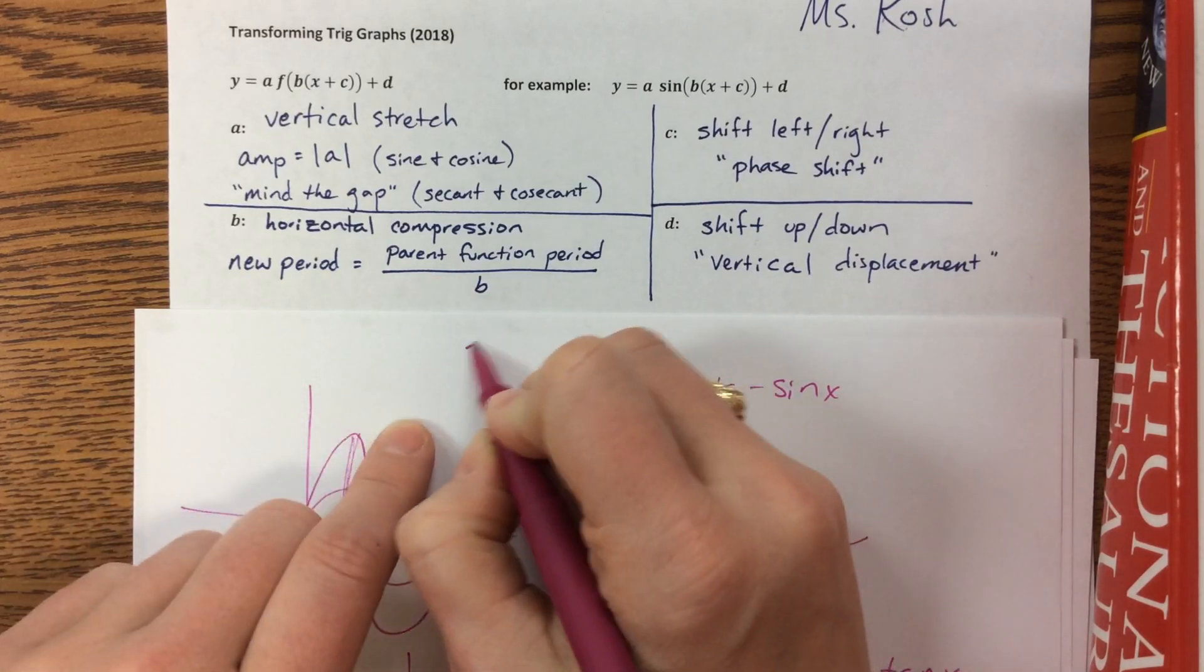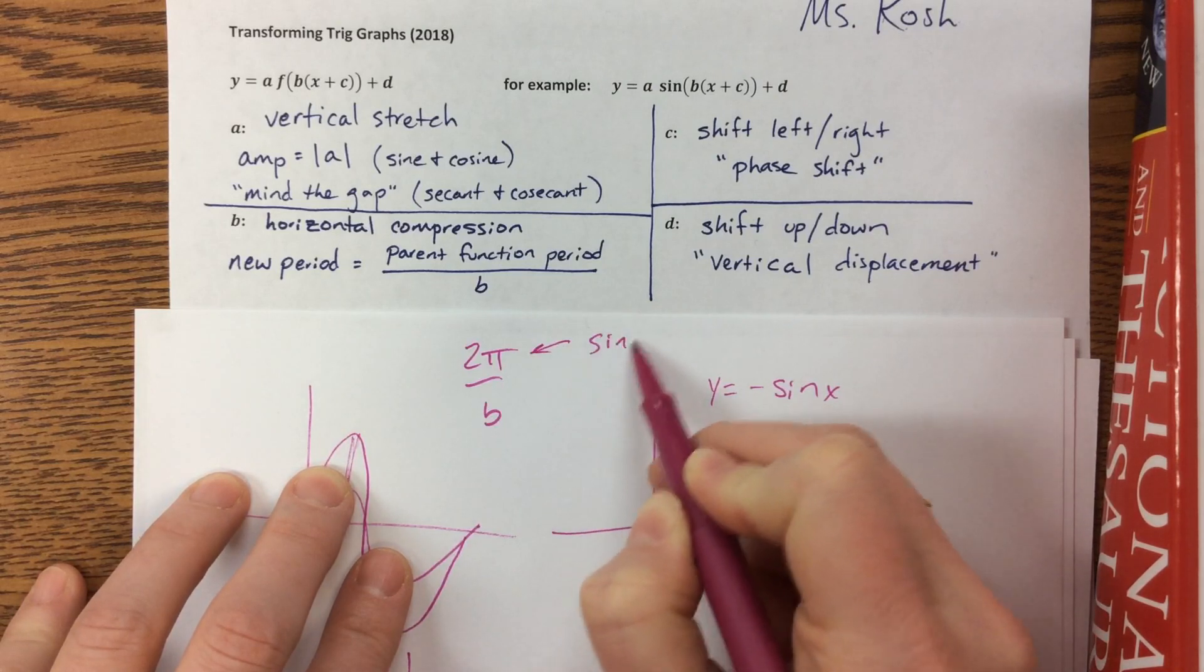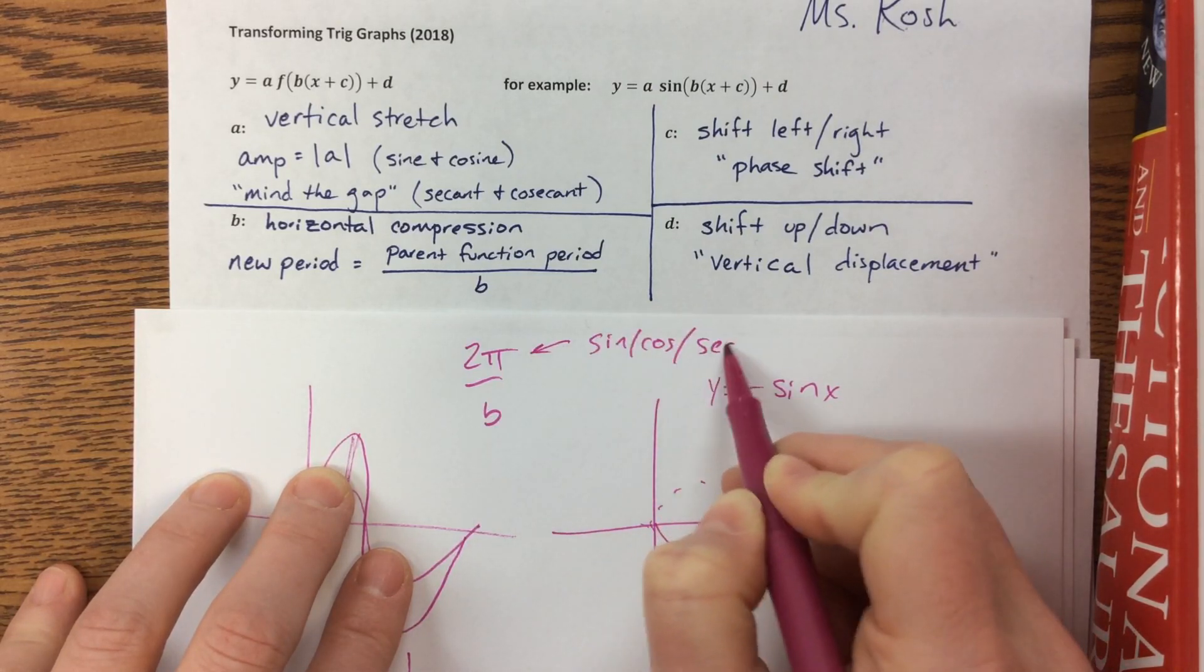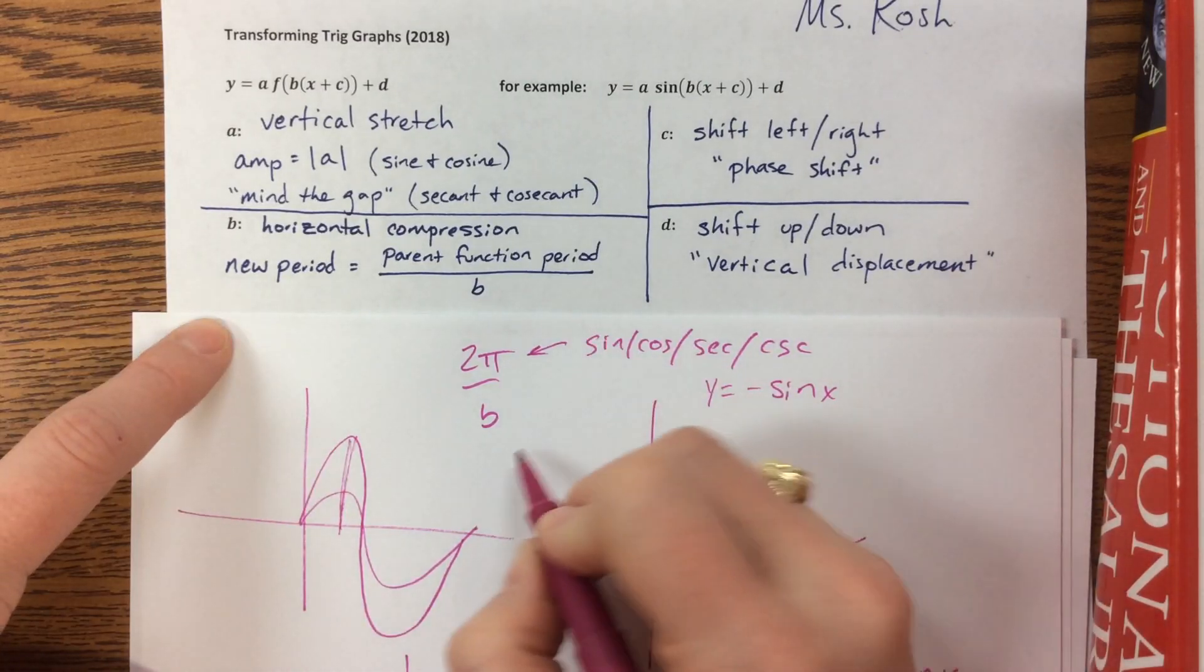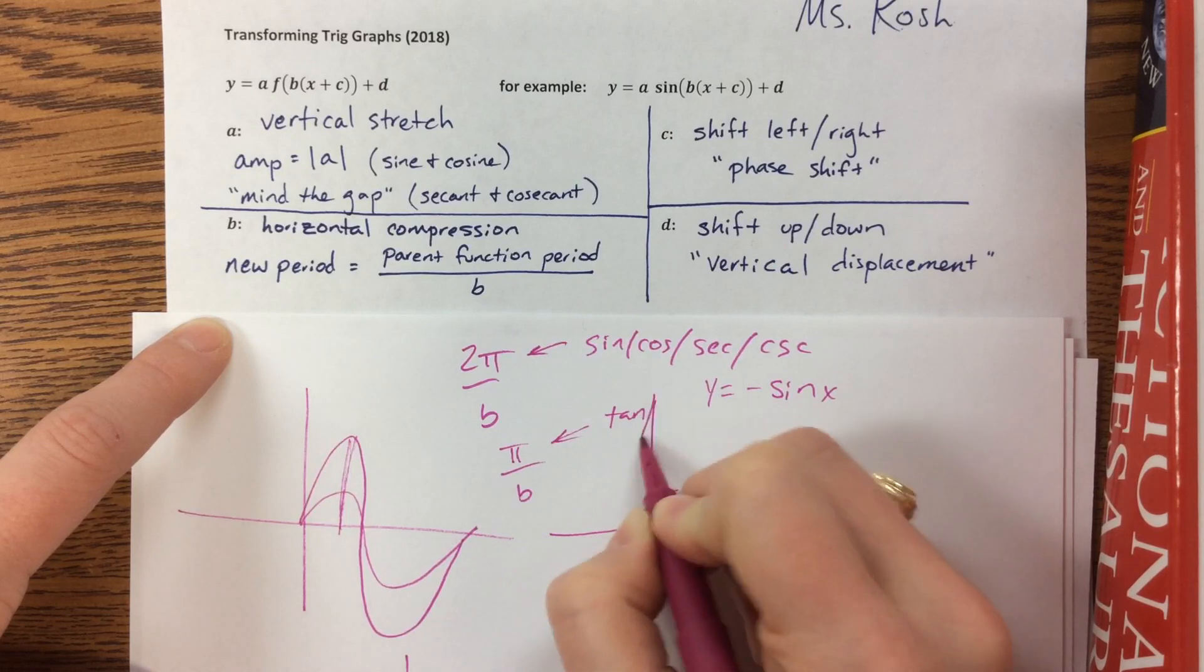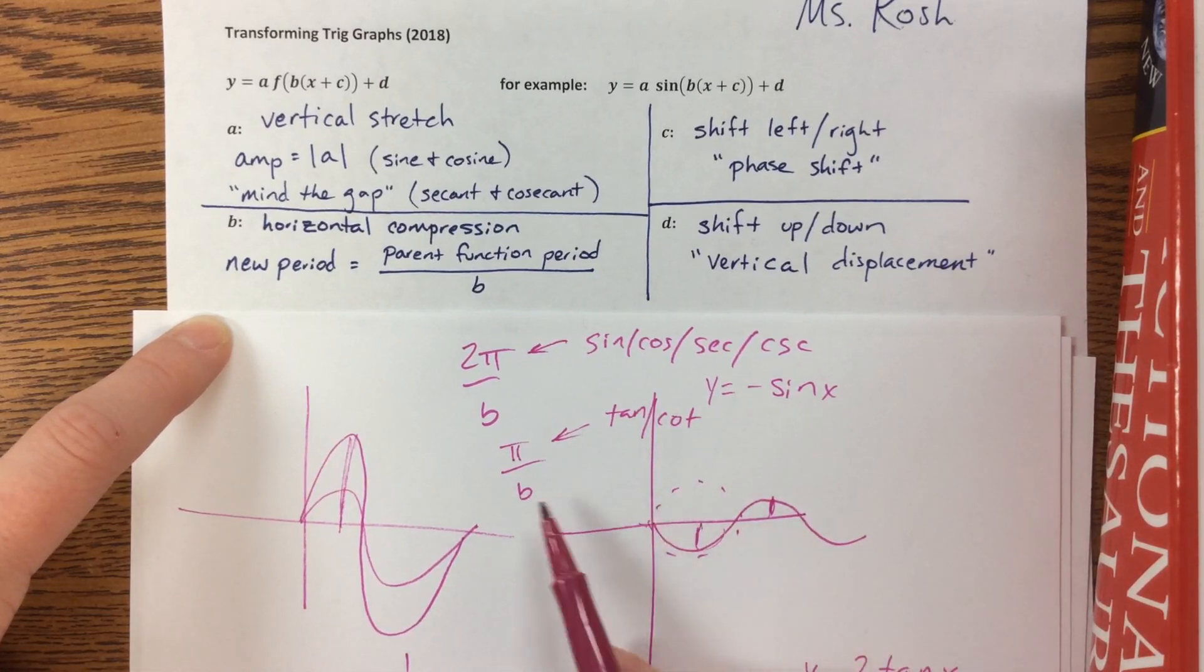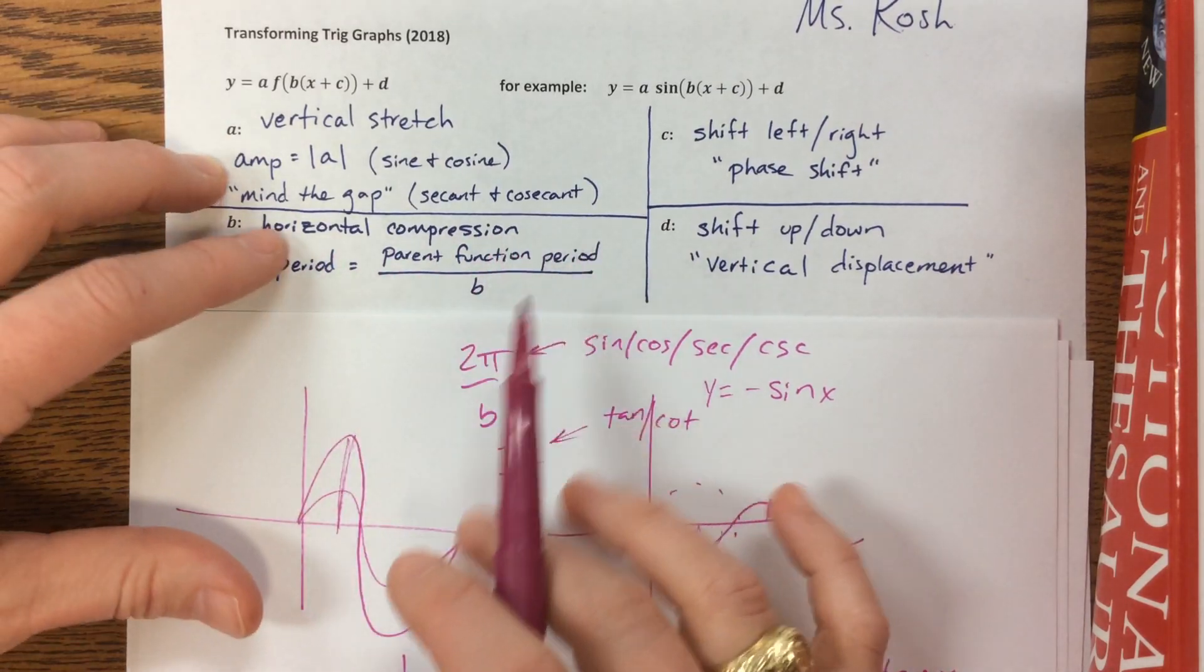And our new period after the transformations is equal to the parent function period divided by b. Now, often you'll see, they'll just say, oh, it's 2π over b. Well, that's true for sine, cosine, secant, and cosecant, but it's not true for tangent and cotangent. If you remember, tangent and cotangent have a period, their parent function has a period of π. So I just like to write this because that's true for all cases.